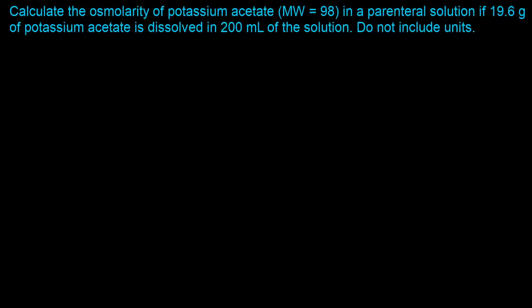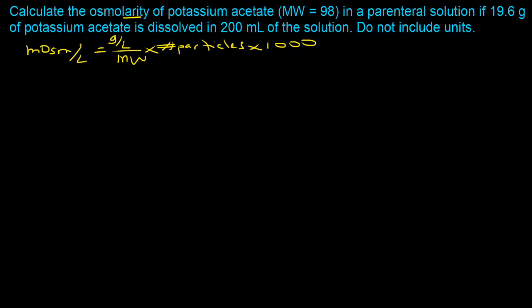Moving to the next example: calculate the osmolarity of potassium acetate (molecular weight = 98) in a parenteral solution, if 19.6 grams of potassium acetate is dissolved in 200 milliliters of solution. Do not include units. We start with the equation: milliosmoles per liter = (grams per liter ÷ molecular weight) × number of particles × 1000. The molecular weight has already been given as 98, so we don't need to calculate or recall it.